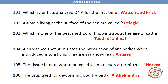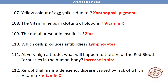The tissue in man where no cell division occurs after birth is nerve tissue. The drug used for deworming poultry birds is anthelmintic. The yellow colour of egg yolk is due to xanthophyll pigment. The vitamin that helps in clotting of blood is Vitamin K. The metal present in insulin is zinc.